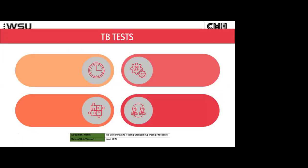Let's start off with the GeneXpert Ultra. We now talk about the NAAT test - the Nucleic Acid Amplification Test. These are basically all DNA or PCR-based tests, and these tests have become the gold standard of how we think in terms of diagnosis of TB.